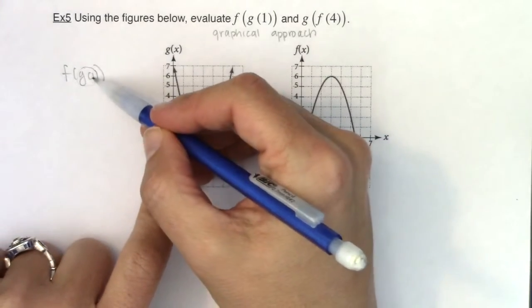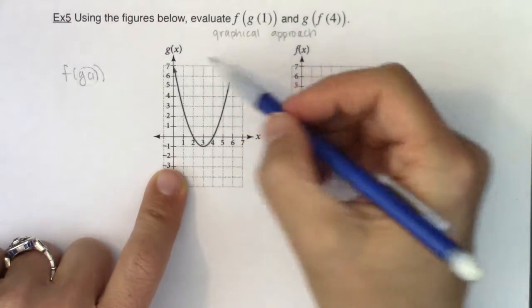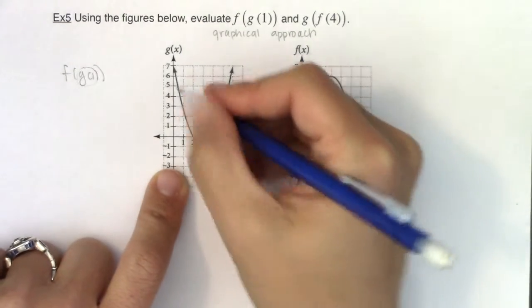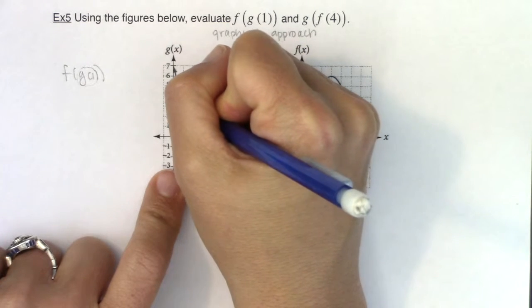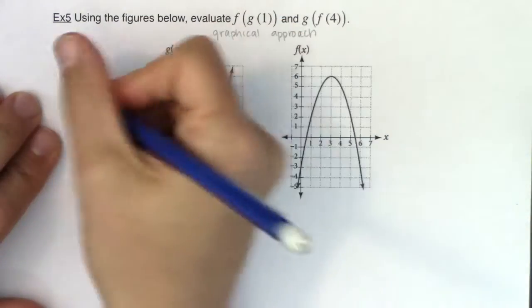So if I'm looking for g of 1, that means my x-coordinate is 1 and I'm hopping onto this parabola because that's the g function, right? I don't want this one just yet. So I want g of 1, which I'm just going to assume hits at this nice point of 3. So this looks like it's at 1, 3.